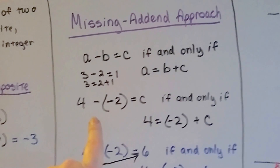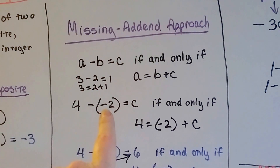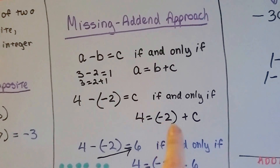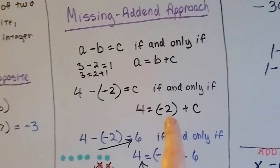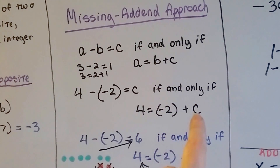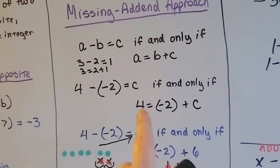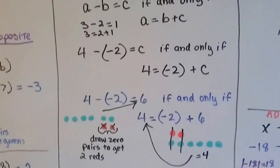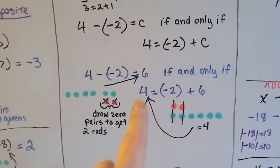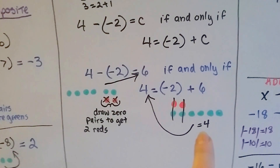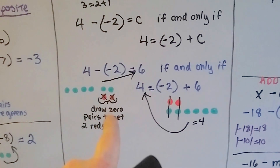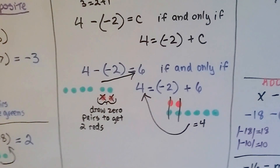Let's put some negative numbers in and see how that looks. 4 minus a negative 2 equals a number if and only if 4 equals negative 2 plus that number. What does negative 2 need to be added to to get to positive 4? It needs to get over the hump of 0, so it needs to add 2 there, and then 4 more to get to positive 4 — that's 6. So 4 minus a negative 2 equals 6 if and only if 4 equals negative 2 plus 6. These cancel each other out, we get positive 4, and we drew zero pairs to get rid of the negative 2 and were left with 6 positives.